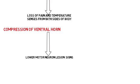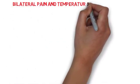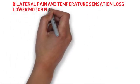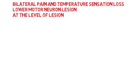So combining both of these, we get a bilateral pain and temperature loss at the level of the lesion, and we also get the lower motor neuron lesion symptoms on both sides at the level of the lesion. This explains all the findings which we get in the case of syringomyelia.